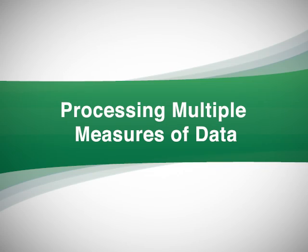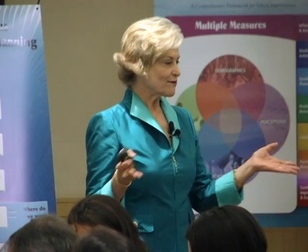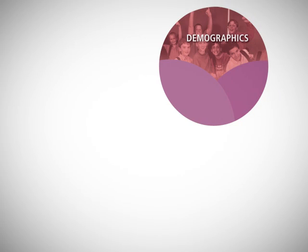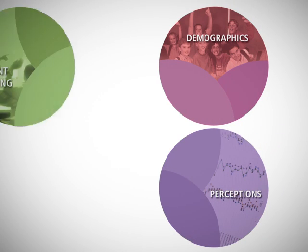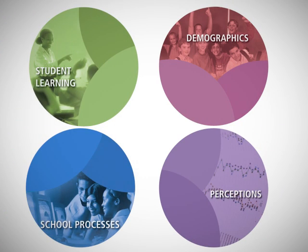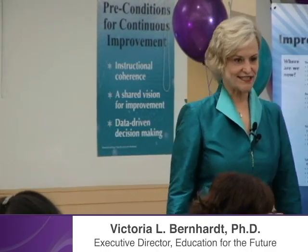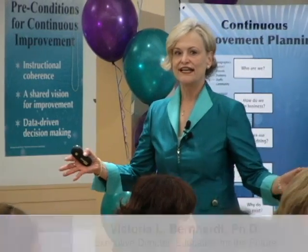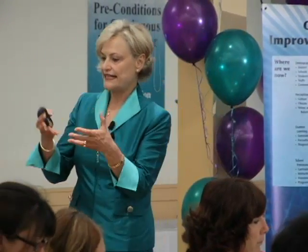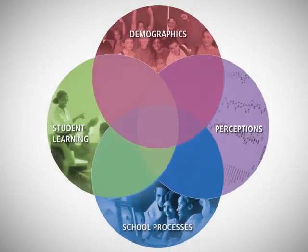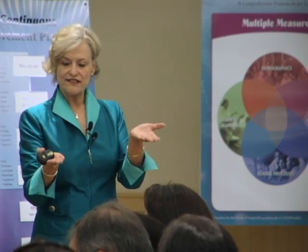Of all of the data that you'd want to gather in the school to understand where we are now, they fall into these four categories: demographics, perceptions, student learning, and school processes. Each one is critical for giving us valuable information about our system, about how we do work. When you start connecting them, however, you can start seeing those linkages and all of a sudden the analysis is very, very deep, so we can understand the impact of our actions on the students.